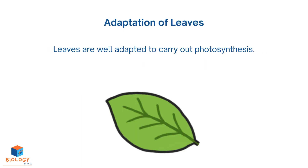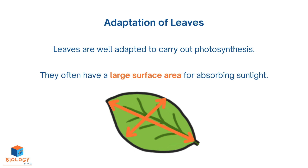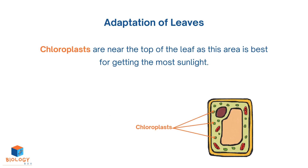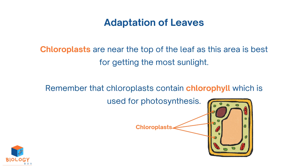Leaves are well adapted to carry out photosynthesis. They often have a large surface area for absorbing sunlight. Chloroplasts are near the top of the leaf, as this area is best for getting the most sunlight. Remember that chloroplasts contain chlorophyll which is used for photosynthesis.